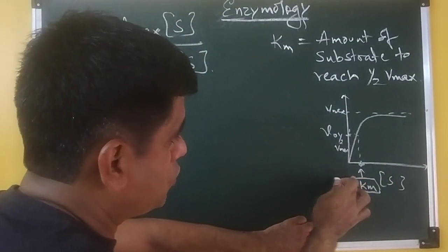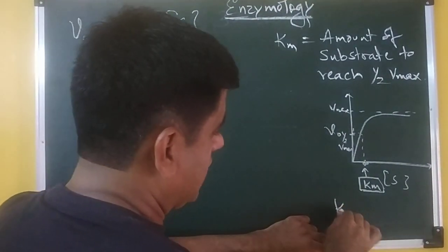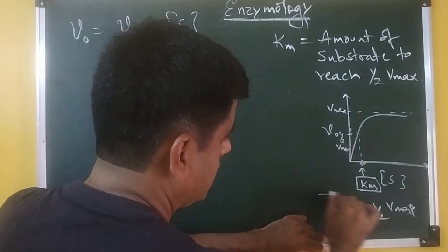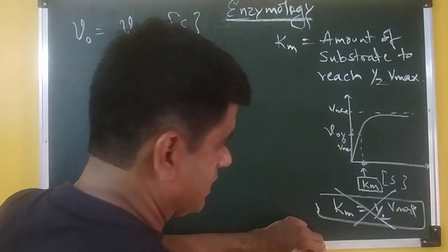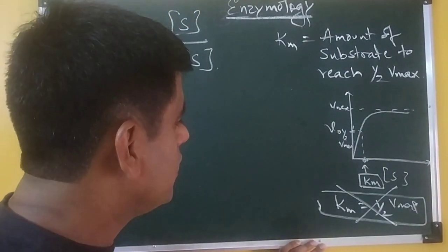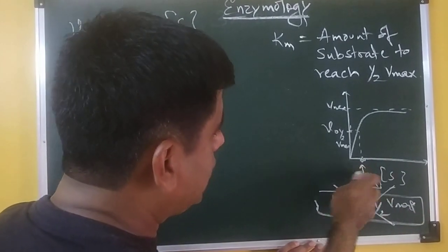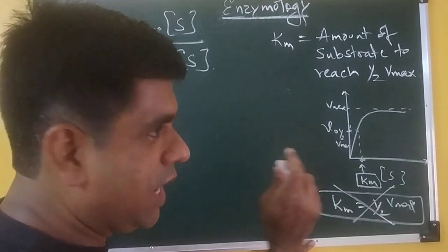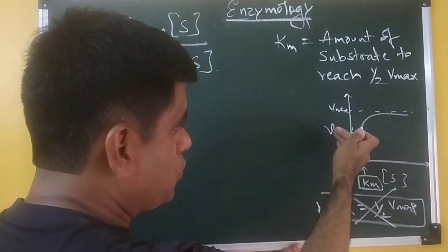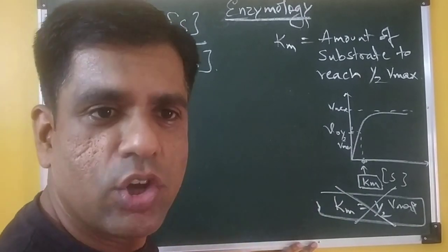Many times, students write Km is equal to half of Vmax. Remember, it is not like this. Km is not equal to half of Vmax. So, Km is the amount of substrate required to reach half of the Vmax. Half Vmax reach vayala, jayoda substrate laghto hai. That amount of substrate is called as your Km.